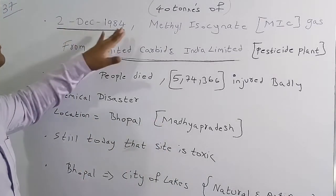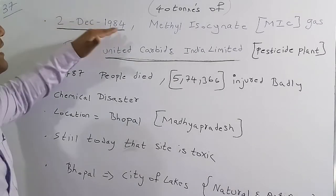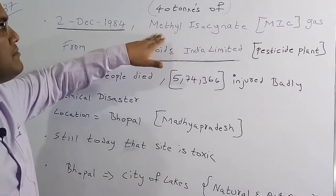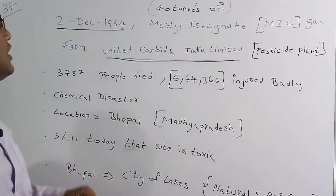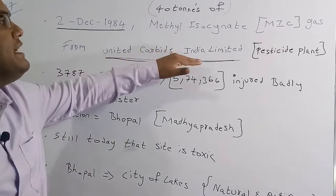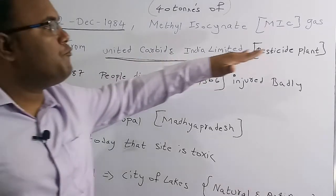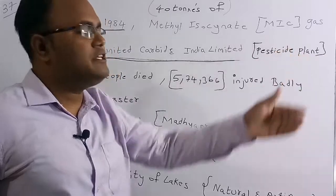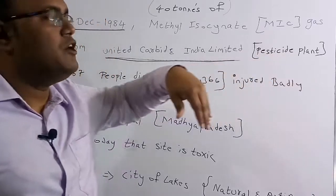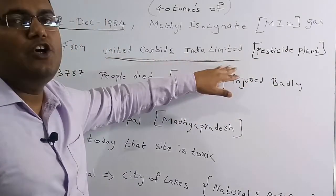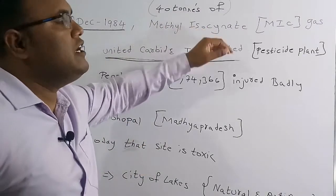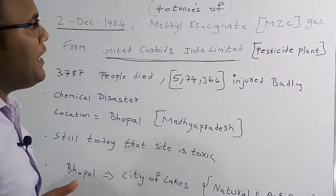On 2nd December 1984, a gas named Methyl Isocyanate was released — it leaked from a company called Union Carbide India Limited, which is a pesticide plant. This is one of the most important facts frequently asked in examinations.